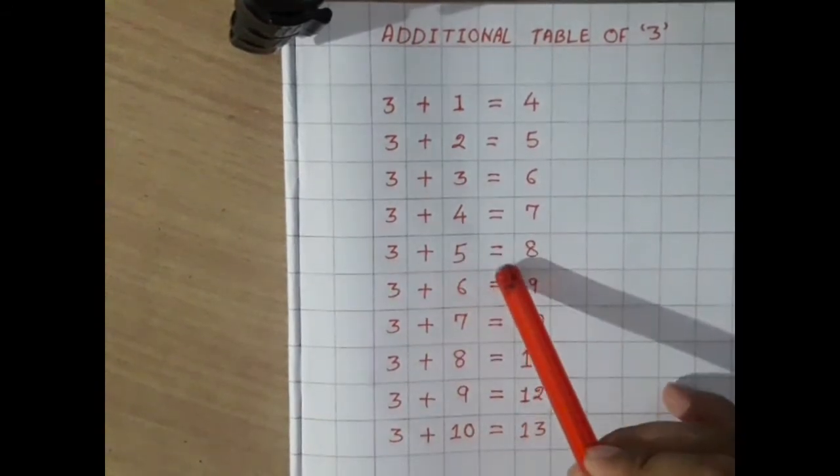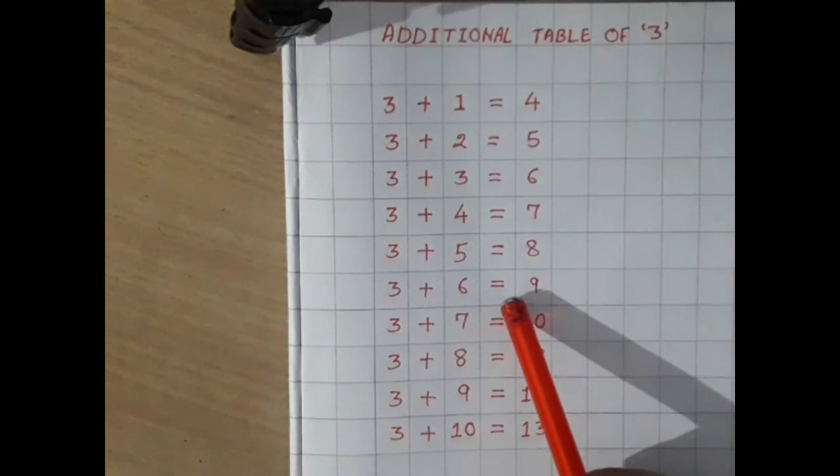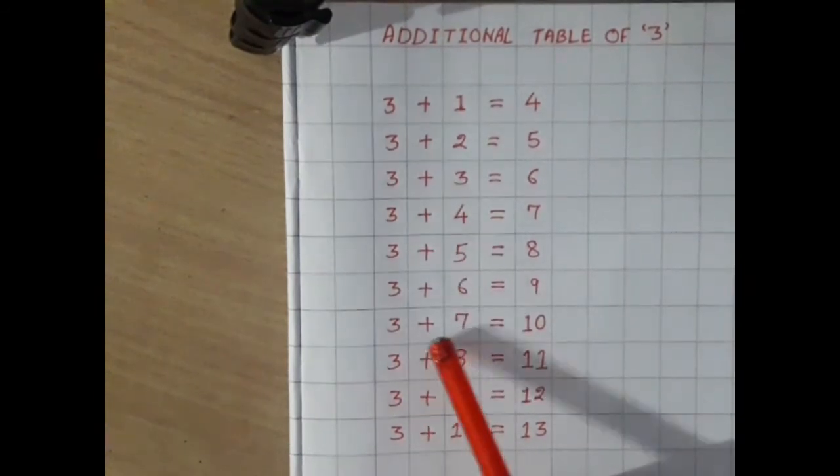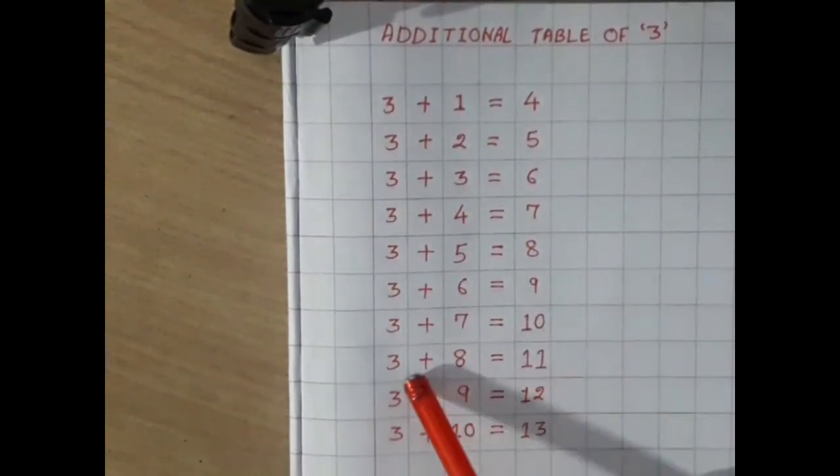3 plus 5 equals 8, 3 plus 6 equals 9, 3 plus 7 equals 10.